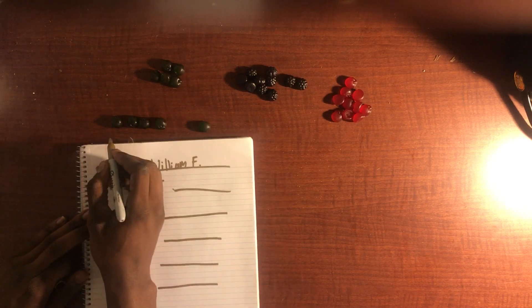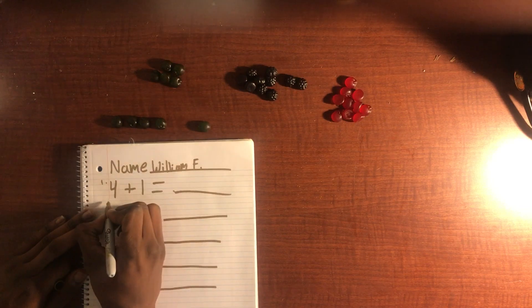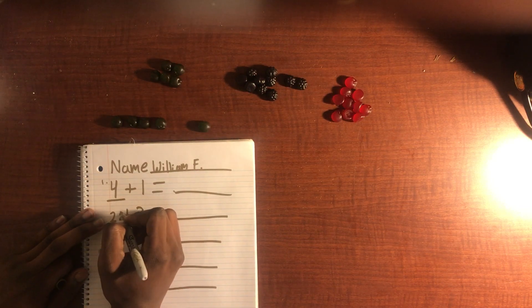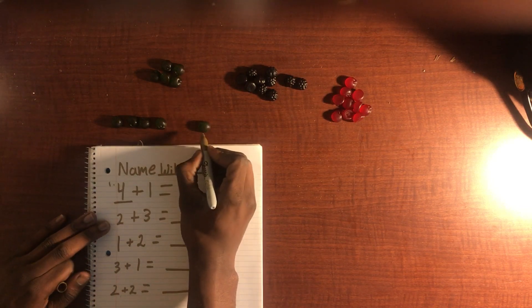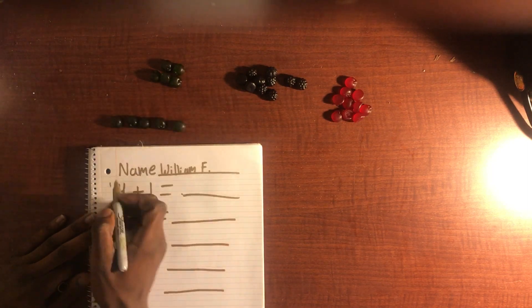As you can see, we have one gummy, two gummies, three gummies, four gummies, and that'll be our four here. And if you were to add one, we'll end up with five.